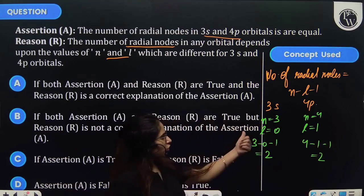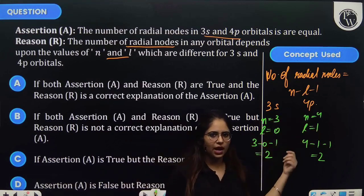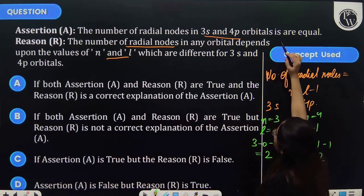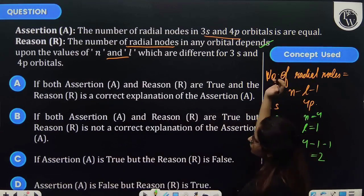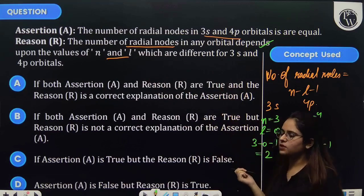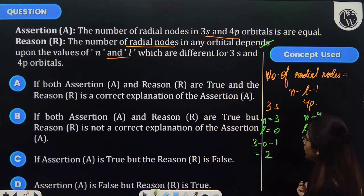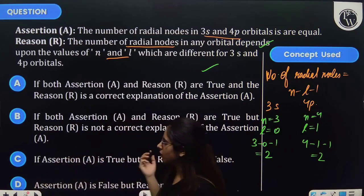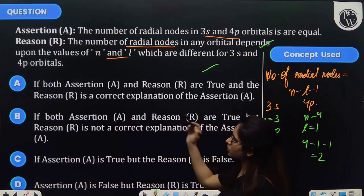So for both 3s and 4p orbitals, we are having the same value of radial nodes. That means the assertion is right. And then the reason—the number of radial nodes depends on the two values, that is n and l—this is also correct. That means both of these are correct and it is the correct explanation of the assertion.